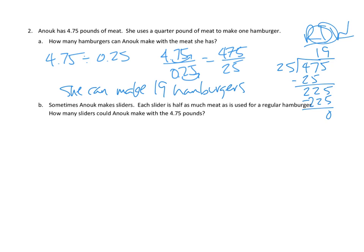We didn't really draw in this case because we didn't make a drawing. Now we could have done that. We could have made a little tape diagram and said, each of these is a quarter pounder. How many of those can I fit in something that is 4.75 long? 1, 2, 3, 4, 5, 6, 7, 8, 9, 10, 11, 12, 13, 14, 15, 16, 17, 18, 19. In the end, we could fit 19 quarter pounders into 4.75 pounds of meat.